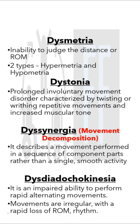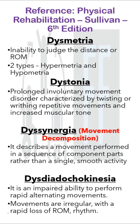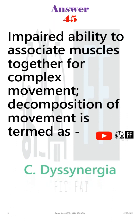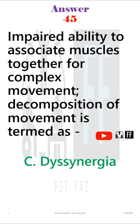The fourth option is dysdiadocokinesia — an impaired ability to perform rapid alternating movements. Movements here are irregular with a rapid loss of range of motion and rhythm. You will find all of this in your Sullivan book. The answer is option C, that is dyssynergia.